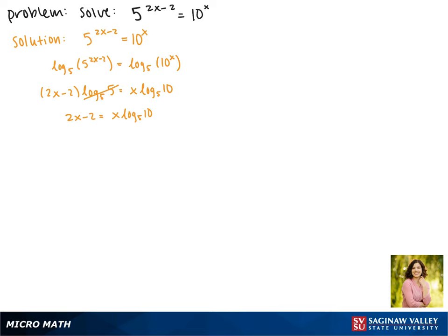To solve for x, we'll move both x terms to the same side, giving us 2x minus x times the log base 5 of 10 equals 2. We can factor an x out of the left side, so this becomes x times the quantity 2 minus the log base 5 of 10 equals 2. Now we divide both sides by the whole quantity 2 minus the log base 5 of 10.